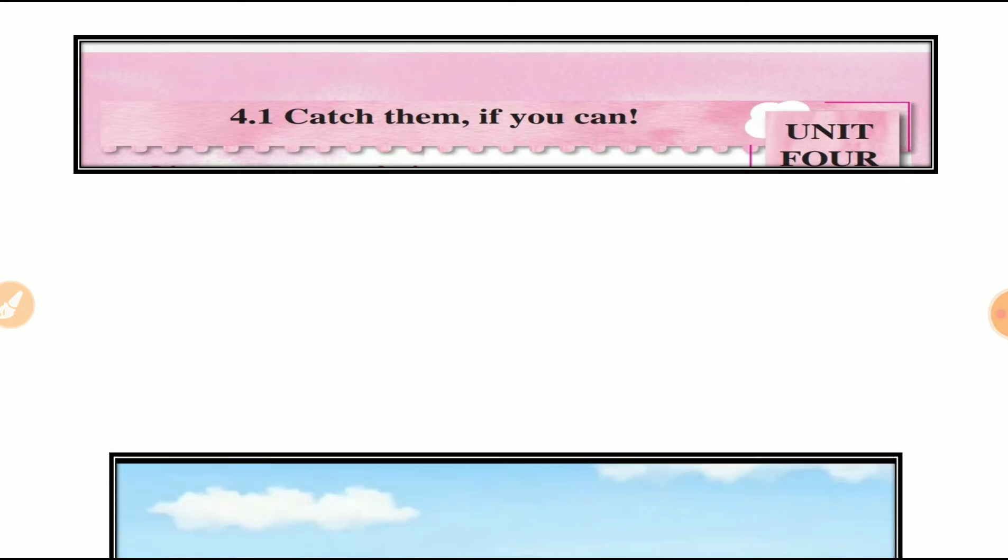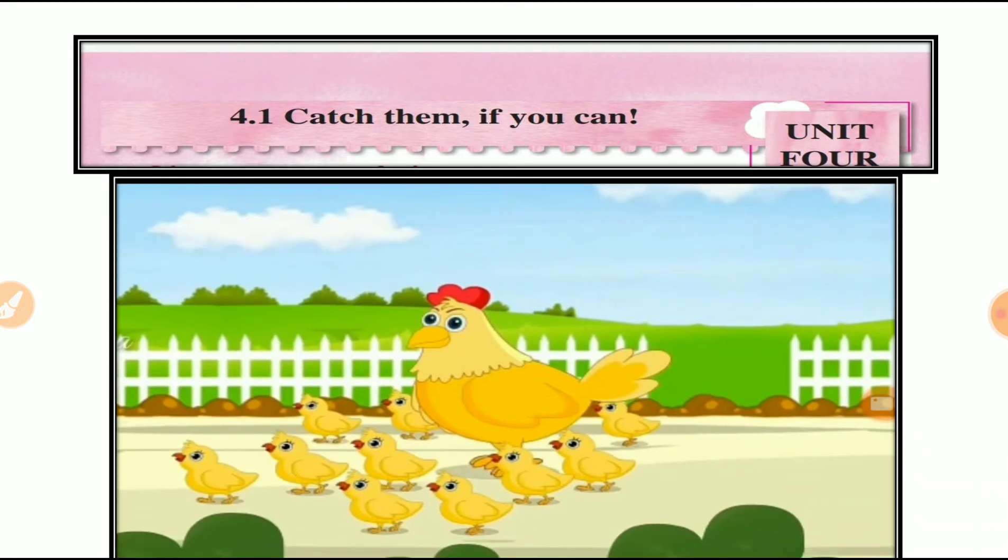Today we are going to learn catch them if you can. Look at this picture. What is this in this picture? Kya hai yaan par? Hen nahi ye. Kya hai ye? Hen. Or ye kya hai iske? Chicks. Kya hai ye? Chicks.